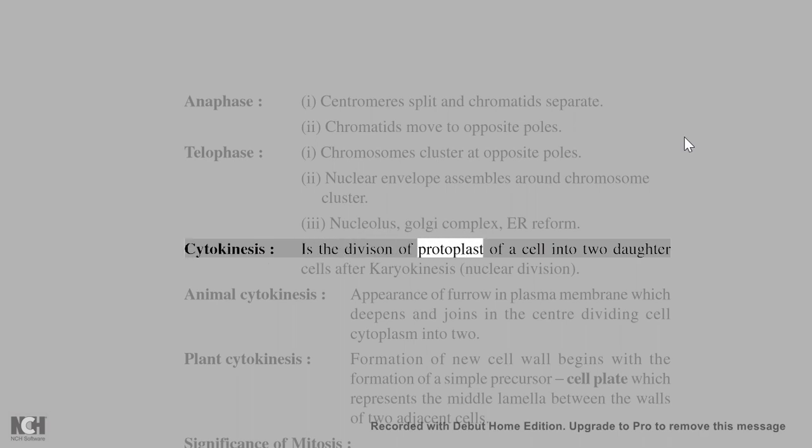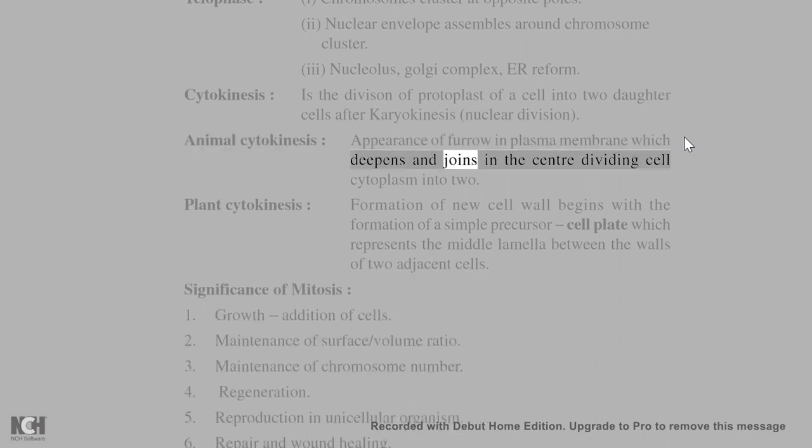(4) Cytokinesis is the division of protoplast of a cell into two daughter cells after karyokinesis (nuclear division). (5) Animal cytokinesis: Appearance of furrow in plasma membrane which deepens and joins in the center, dividing cell cytoplasm into two.